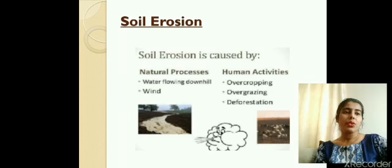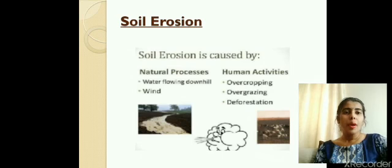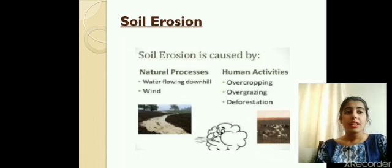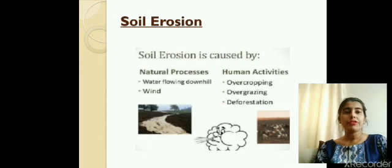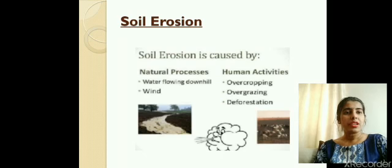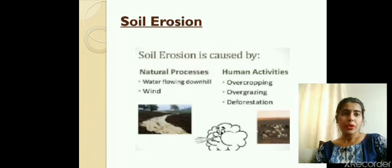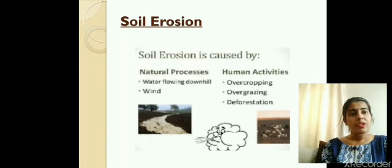Next is soil erosion. Soil erosion is the removal of the top layer of the soil. Since the topsoil is the most fertile layer, its removal means the soil quality is going to decrease. Soil erosion is caused by natural processes like water flowing or wind blowing — these are the two natural processes that can cause soil erosion.